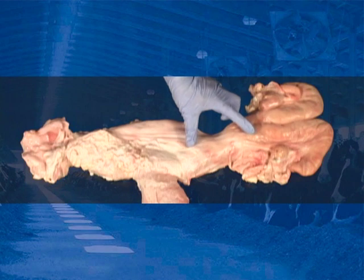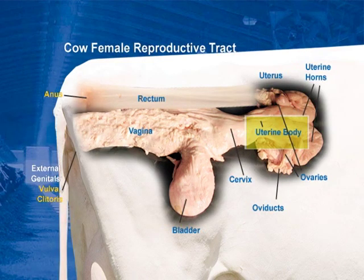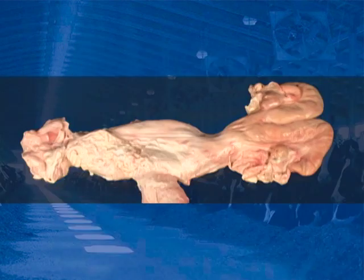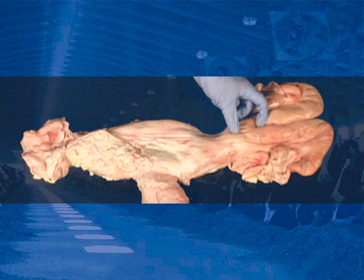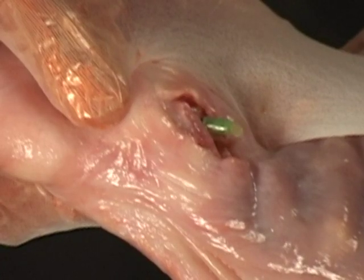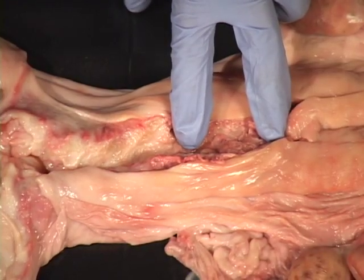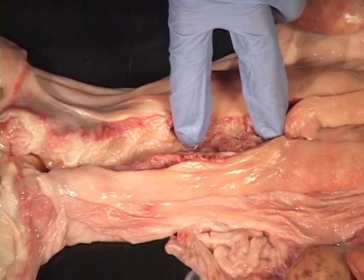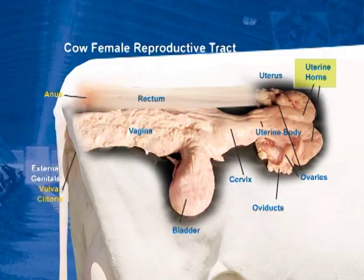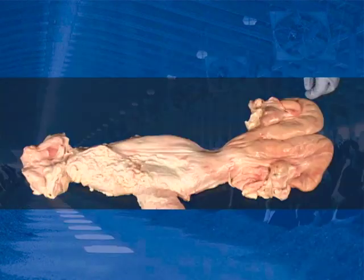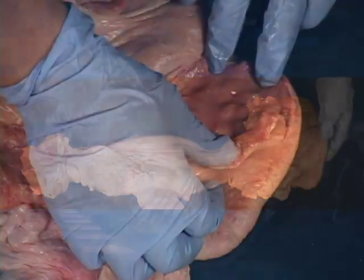The cervix is approximately 2 to 5 inches in length and 2 inches in diameter. The body of the uterus is located anterior to the cervix. This structure is the place where semen should be deposited — the target site. It is made up of soft tissue and is usually one inch long.